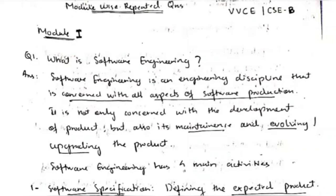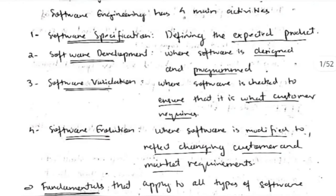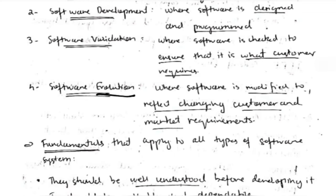Software engineering is the techniques used when we are developing a software product. There are four steps: first, specification — what product you are developing; second, development process — we will design and program the product; third, validation — we will check with the customer that the product being developed is correct; and fourth, evolution — with time you upgrade the product to keep up with customer requirements.